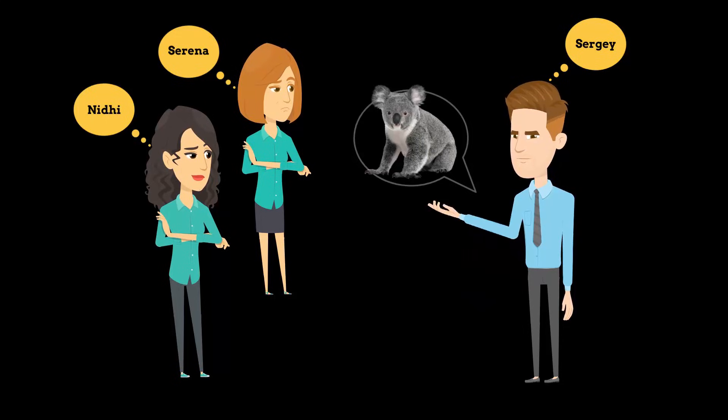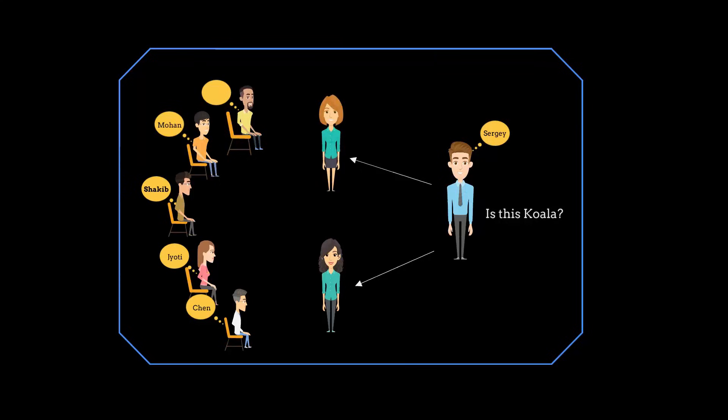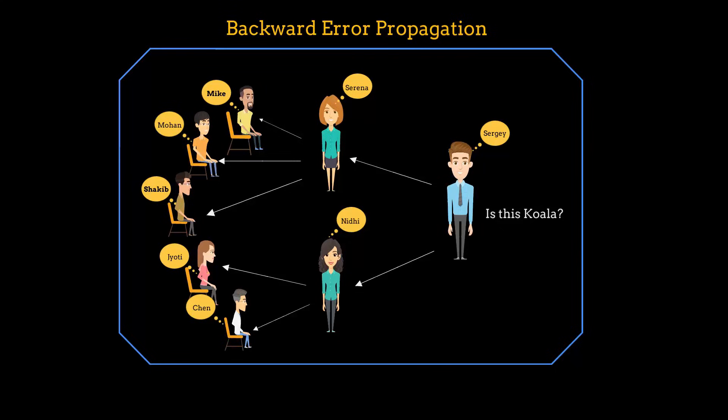Serena and Nidhi will then go back to rest of the classroom and say, 'Hey Mike, Mohan, Shakib, this is actually koala's ears, eyes, and nose. You need to be careful next time.' So they use this experience of mistake—basically as a group they made a mistake, and the mistake or the error has been passed from Sergey to Serena and Nidhi to the rest of the group. This process is called backward error propagation.